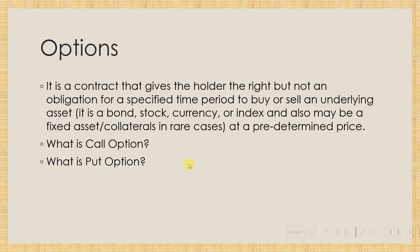A put option gives the option buyer the right to sell an underlying security — maybe a stock — at a pre-specified price to the writer or seller of the put option. In return, the buyer pays a put premium to the seller. If the underlying stock price is less than the exercise price when the option expires, the buyer can buy the stock in the market at a lower price and immediately sell it at the exercise price of the put option.